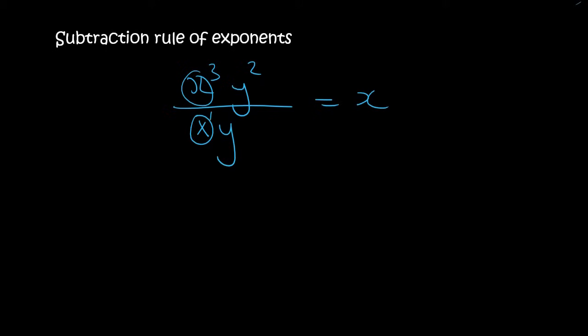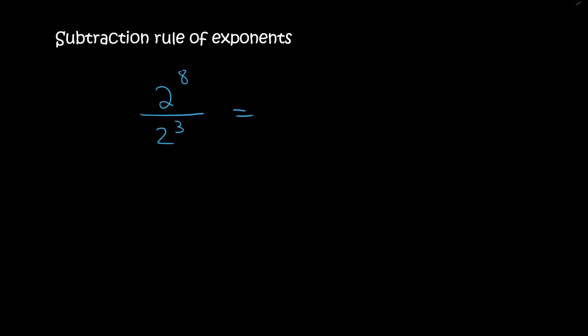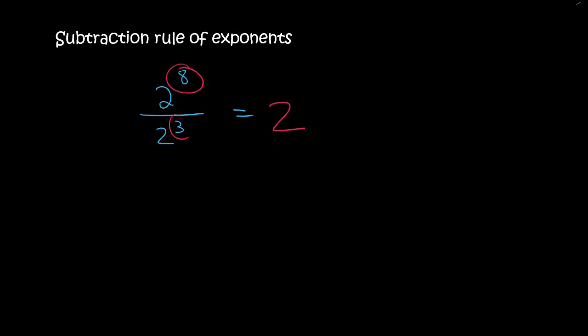So it will be 3 minus 1 which is 2, and then 2 minus 1 which is 1, so the answer is x squared y. Now a lot of students cancel the 2's out — but remember how we did the addition rule. Do the 2's have exponents? Yes they do. So you've got to leave it as a 2 and stick to the exponent rule, which says you subtract, and so that will be 2 to the power of 5.